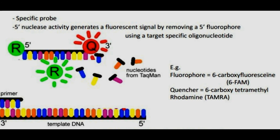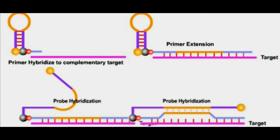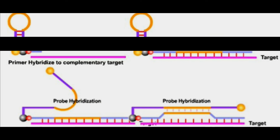Similarly, for signal emission, we can use a scorpion primer where the probe is physically coupled to the primer, meaning the reaction leading to signal generation is a unimolecular one. This is in contrast to the biomolecular collision which occurs in Taqman, for example. After one cycle of PCR extension, the newly synthesized target region will be attached to the same strand as the probe. The probe carries a hairpin-like structure which will denature because it requires less energy than the new DNA duplex produced. Consequently, the hairpin sequence hybridizes to part of the new PCR product, and the separation of the fluorophore from the quencher causes emission of fluorescence, which can be detected under the photodetector.